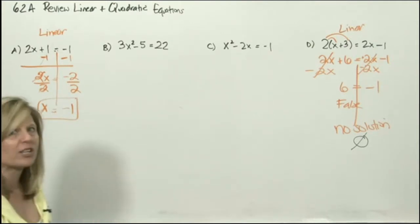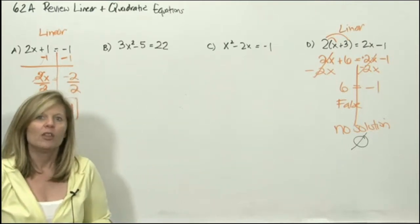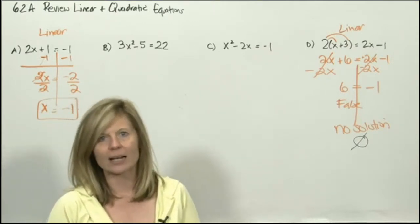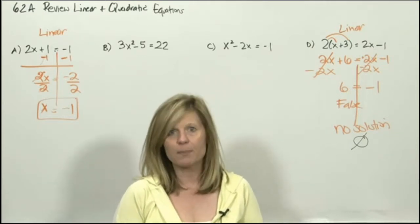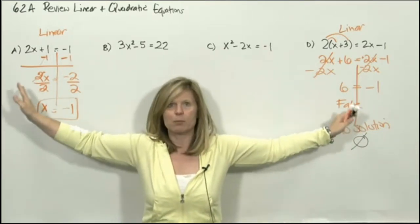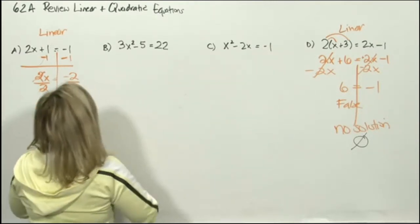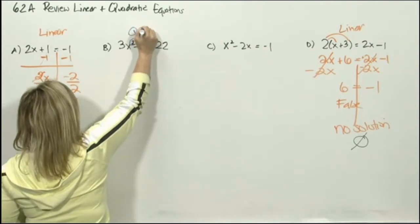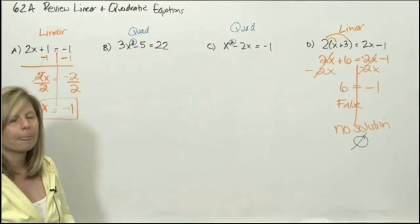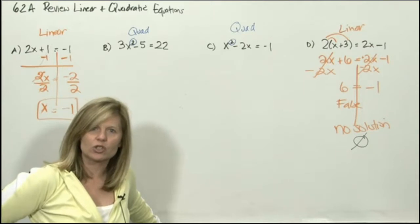It would be great if every trig equation we deal with is linear, but it's not — those are Algebra 1 equations. In Algebra 2, the other famous equation you learned to solve was quadratic. What makes an equation quadratic? It depends on its degree. Linear equations are degree 1. Quadratic equations have exponents that are 2s — the square is what makes them quadratic. And if it's degree 2, that means when you solve a quadratic, you don't get one solution, you get two.